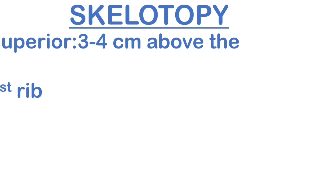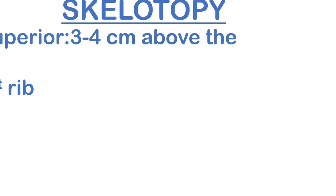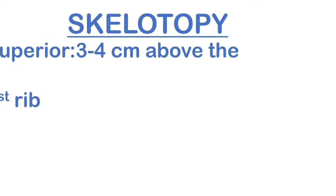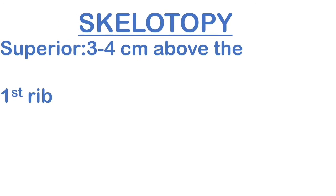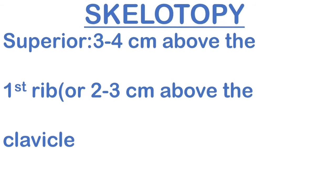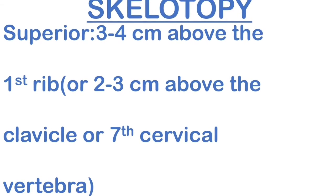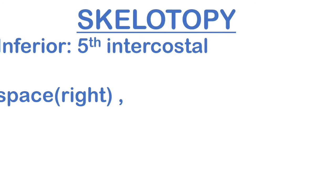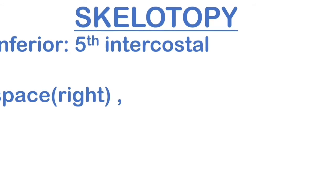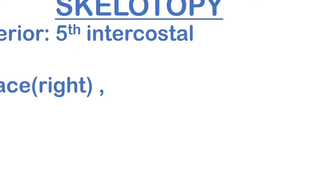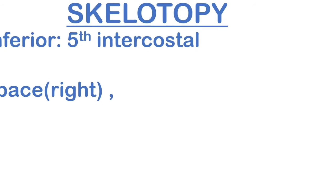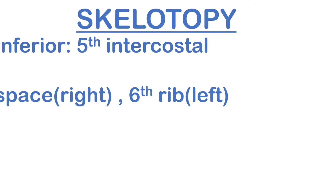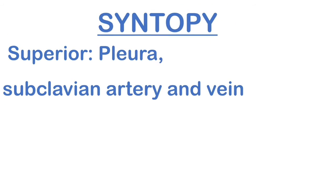Let's talk about the skelotopy of the lungs. Skelotopy is basically the position of the organ according to the skeleton or the bones of the body. The superior portion of the lungs is present three to four centimeters above the first rib, or two to three centimeters above the clavicle, at the level of the seventh cervical vertebra. For the inferior portion, it differs between right and left lung: in the right lung the inferior border is at the fifth intercostal space, and in the left lung it is at the sixth rib.